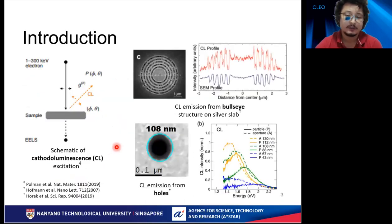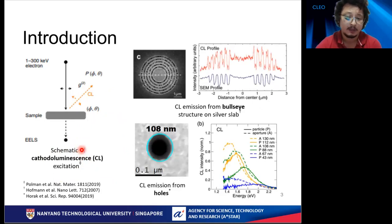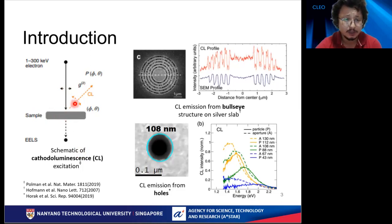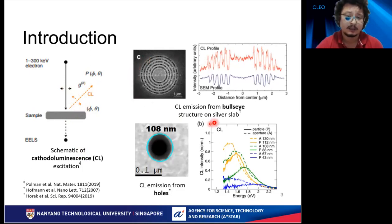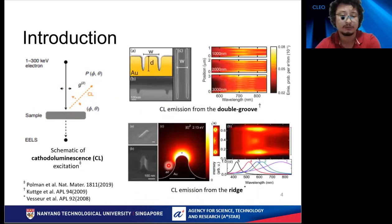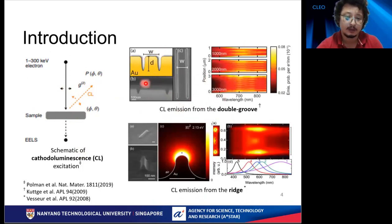First let me introduce the main term we use throughout the talk: cathodoluminescence. Cathodoluminescence is an optical electromagnetic phenomenon in which electrons impacting on a luminescent material cause the emission of photons, as you can see here. It has been used in many applications, like imaging of the bull's-eye structure, CL emission from holes, the study of plasmonic resonance at the double groove system, and the CL emission study of nano ridges.